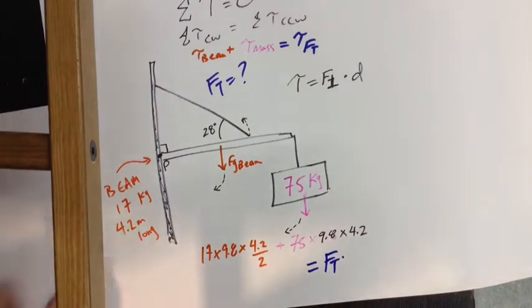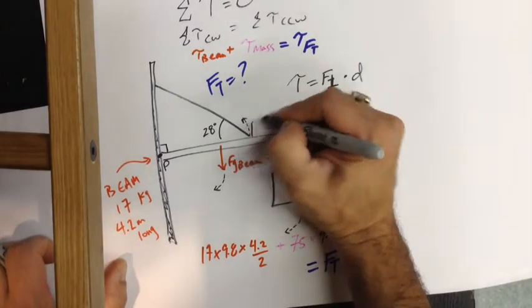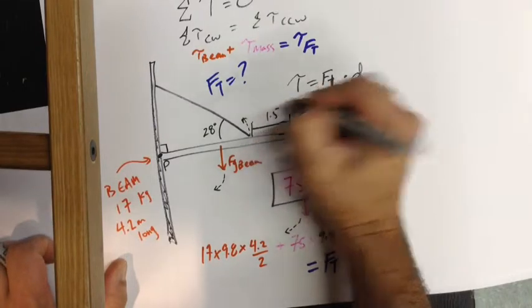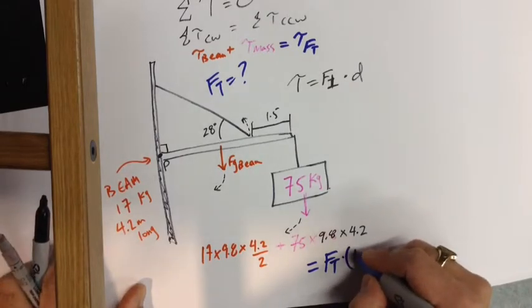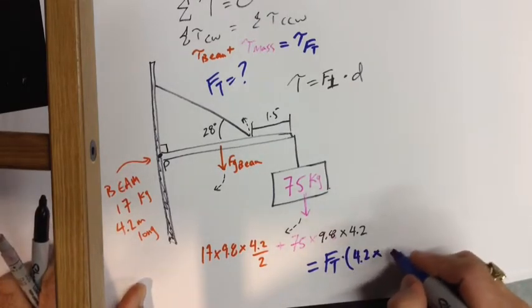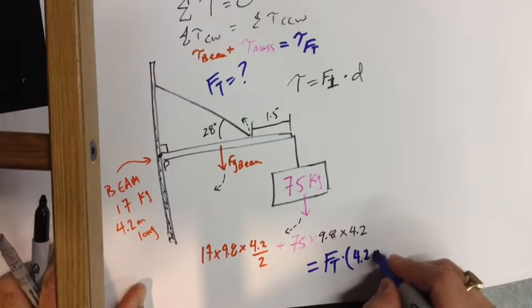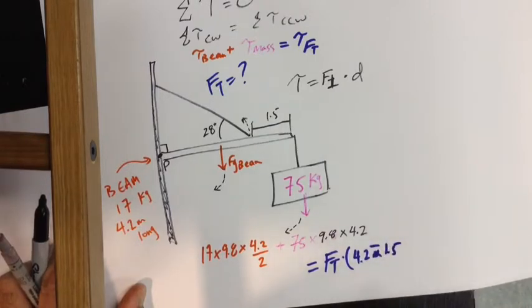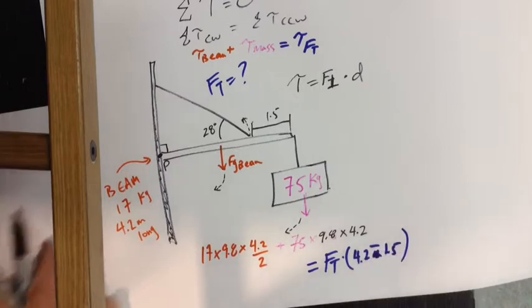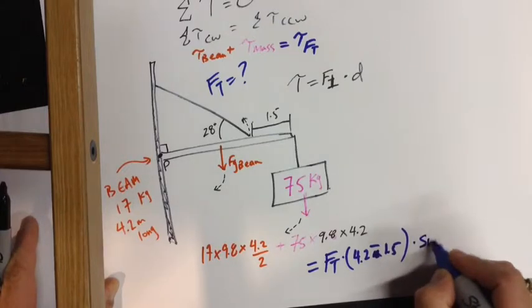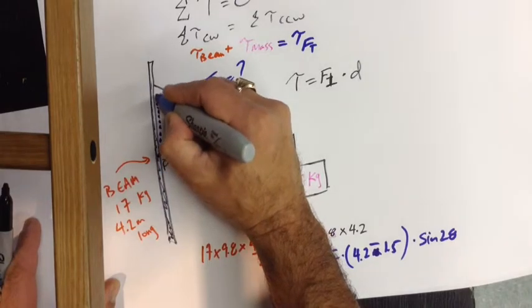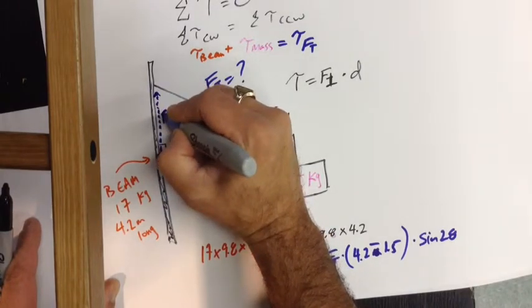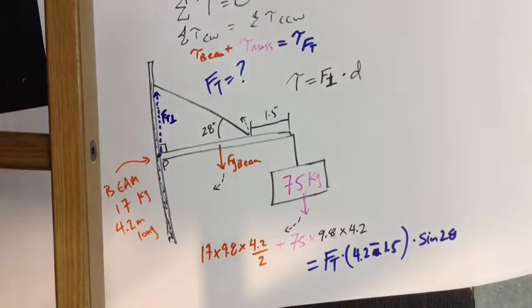This question is missing a distance number here, so let's make this number 1.5 metres from the end. So Ft times 4.2 minus 1.5, times sine of 28. Because this here will represent our perpendicular component of Ft, and that's the opposite to that angle.